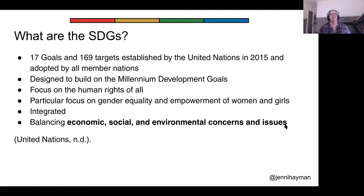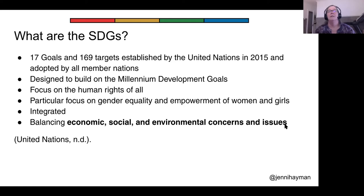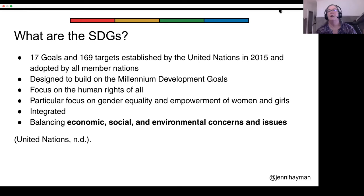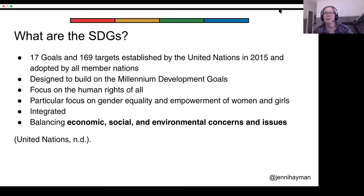What are the sustainable development goals? There are 17 of them, and 169 targets related to those 17 goals — that's a whole lot of targets. These were established by the United Nations in 2015 as a replacement for the Millennium Goals established in the year 2000. It's a refresh of the types of issues being faced by all nations in the world. They focus on human rights, and many goals have a particular focus on gender equality, the empowerment of women, diversity, equity, and inclusion. The goals are integrated and meant to function among each other as part of what nations are doing to better the lives of their people, balancing economic, social, and environmental concerns.